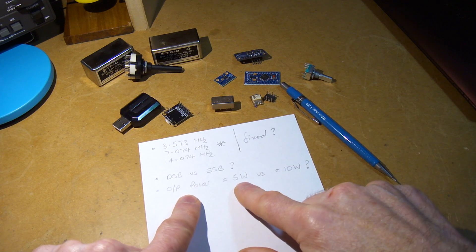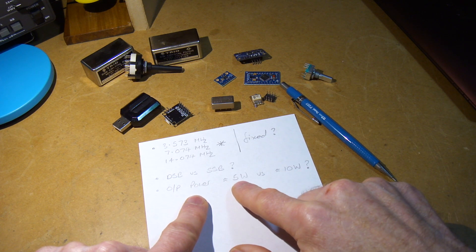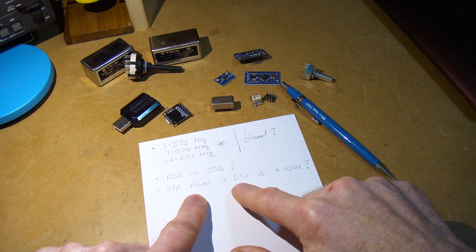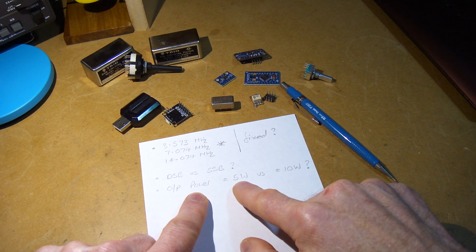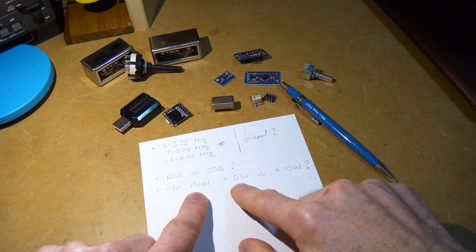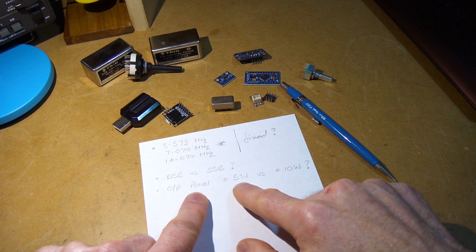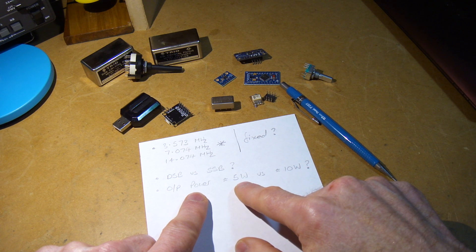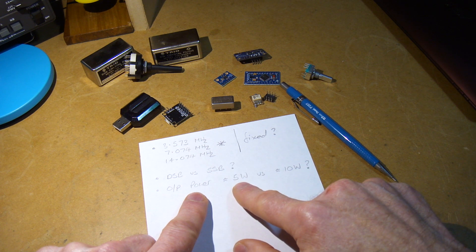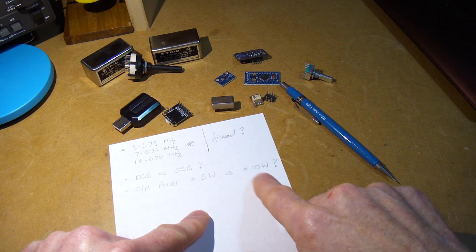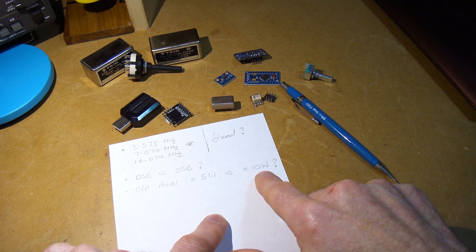In terms of output power, I can sort of stick down with the QRP, noting that FT8 is a low power and low signal strength type mode. From what I can see out there, 5 watts seems to be quite a common kit in terms of FT8. But then again, I'm sort of quite happy if I want to go up to that sort of 10 watts.